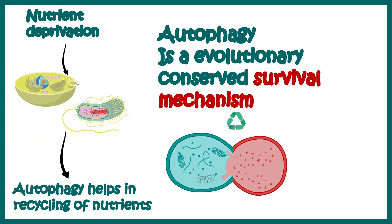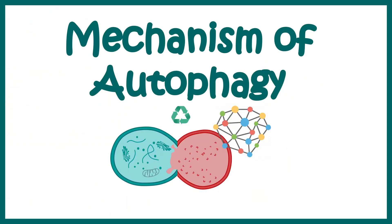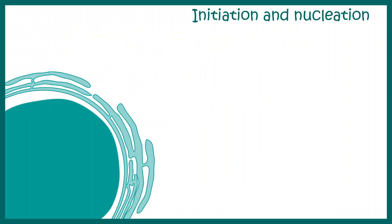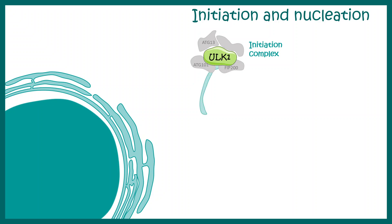Under nutrient deprivation, the cell needs to generate energy, and that is done by autophagy — it recycles existing nutrients to generate energy. Autophagy starts with a molecular step known as initiation and nucleation. An initiation complex helps in this process, and the membrane that forms the autophagosome is derived from the endoplasmic reticulum. An important kinase known as ULK1 (UNC-like kinase 1) helps in this initiation process and is an important regulator of autophagy.